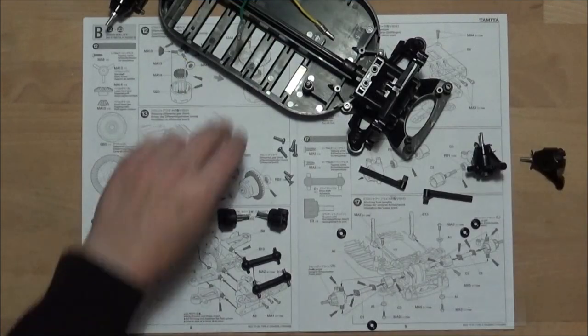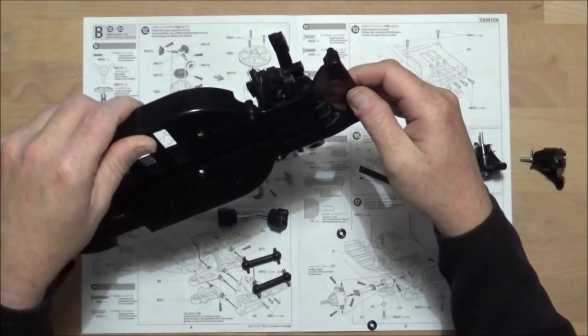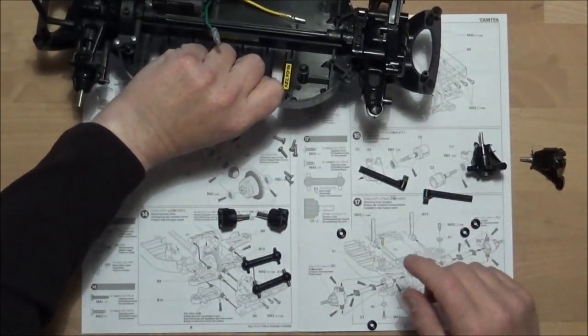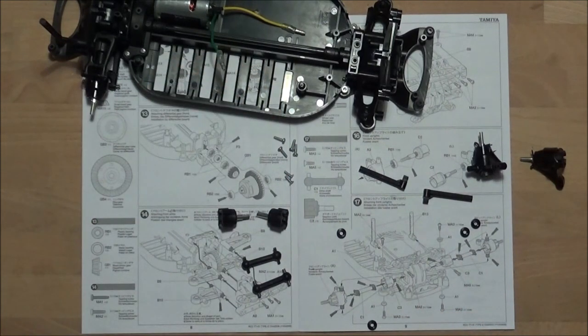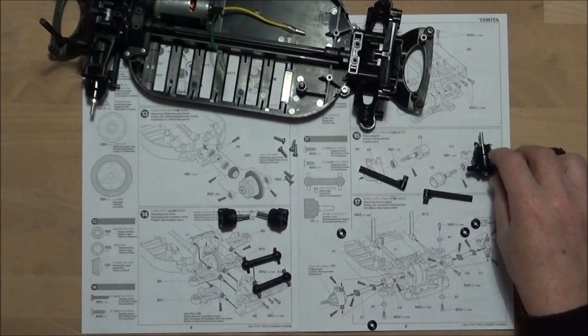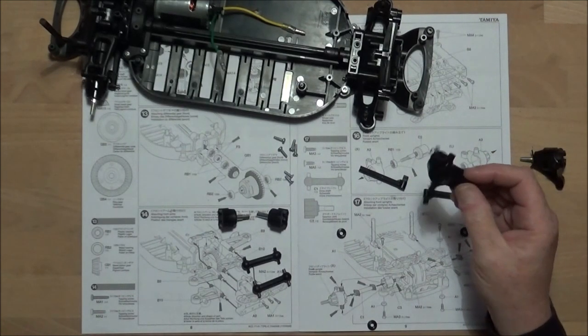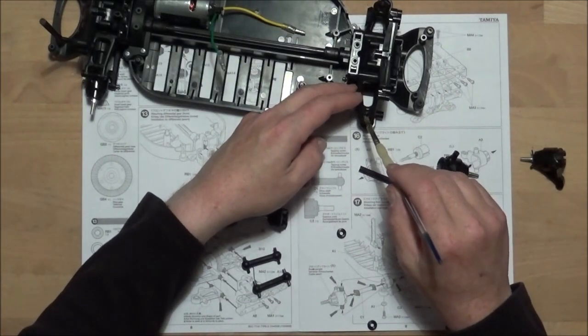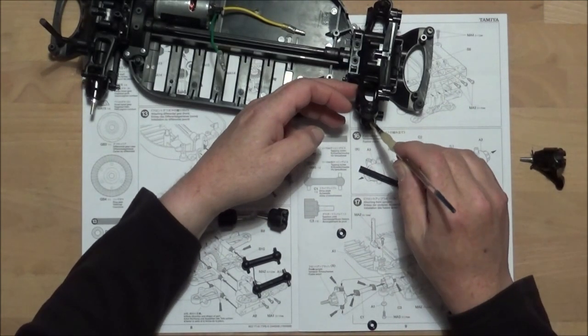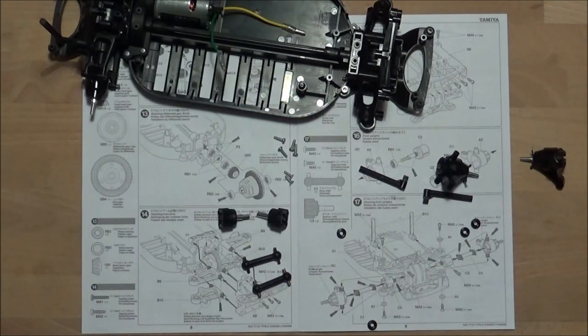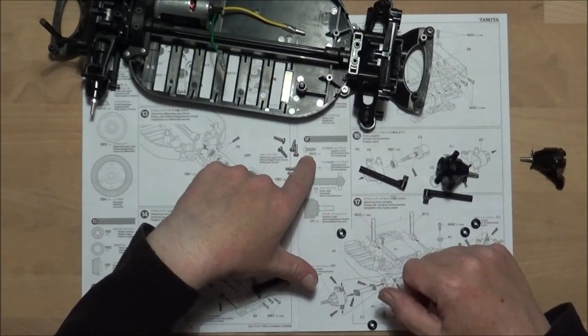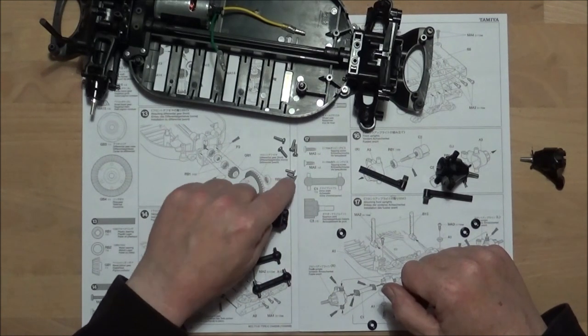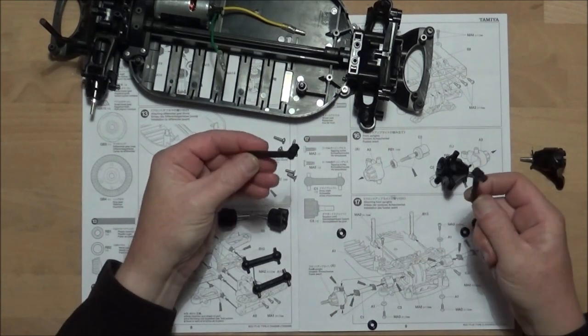We've now got the differential attached and the front bumper mount sorted and the wishbones moving freely, so we can get on to step 17 which is attaching the front uprights or the steering uprights or the steering hubs I would call them personally. It calls for a lot of grease so we'll grease the inner parts of this. We're going to need four MA3s 3x10mm tapping screws and two MA5 3x10mm countersunk tapping screws which are going to be for B13 the body mounts.